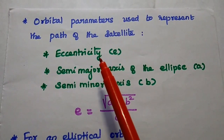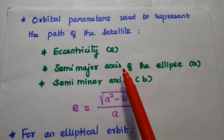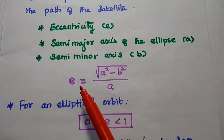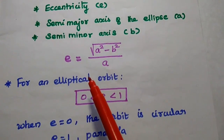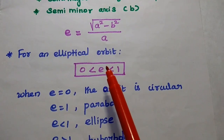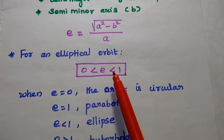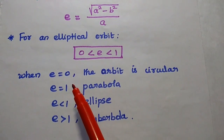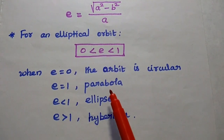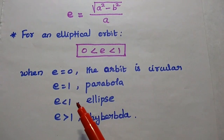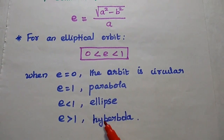Three orbital parameters are used to represent the path of the satellite. Eccentricity can be calculated from the formula: square root of (A squared minus B squared) divided by A. For an elliptical path, this eccentricity value should always be between 0 and 1 — that is, its value is greater than 0 and less than 1. When eccentricity is equal to 0, the orbit becomes circular. Eccentricity equal to 1 means the path is parabolic. Eccentricity less than 1 means it is an elliptical path. E greater than 1 means a hyperbolic path.